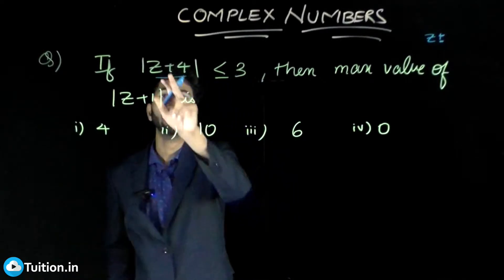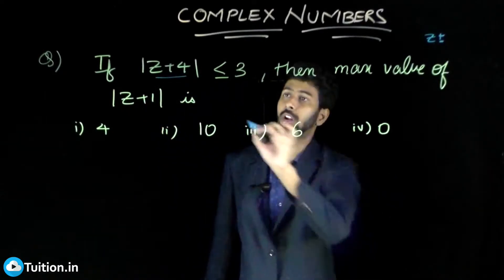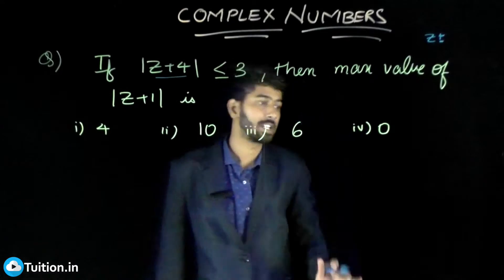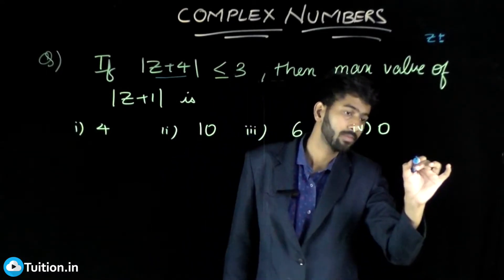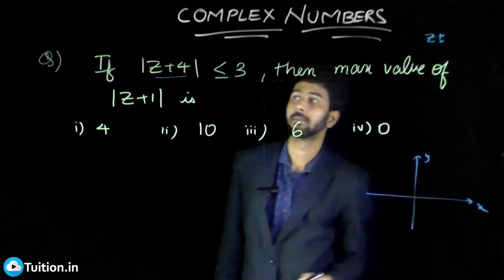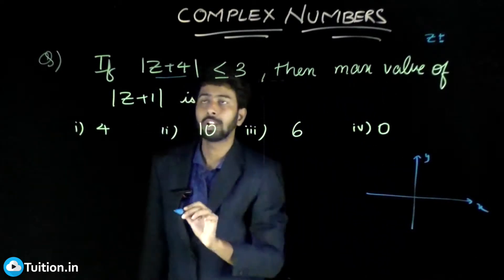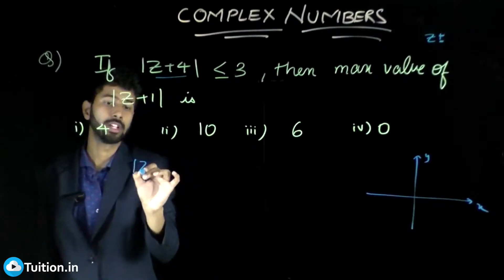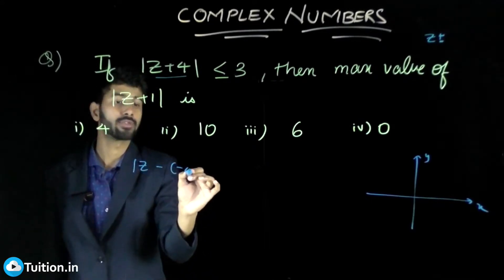So look at this question now. Let us see how mod z plus 4 less than or equal to 3 looks like. So this is my x axis, this is my y axis.